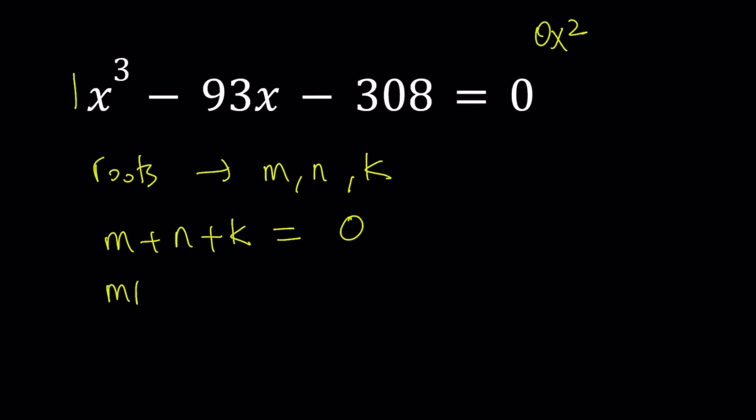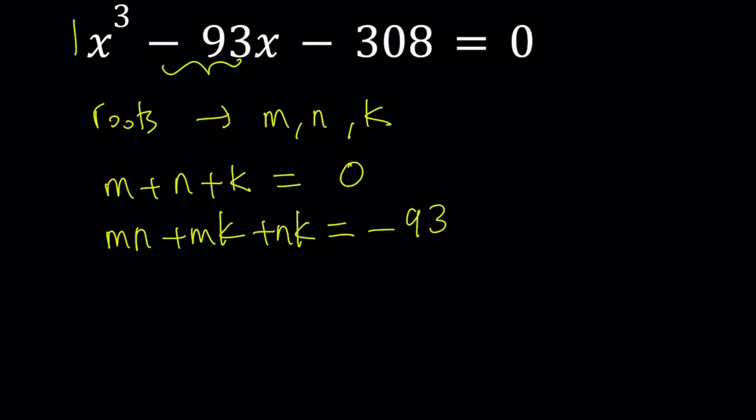What about the two ways, mn, mk, and nk? That is c over a. c is negative 93, so it's going to be negative 93. Simple, very easy. What about the product? Well, the product is the coolest part here, because that's what we're going to work on, basically. The product is negative d over a, which is the opposite of the constant term in this case. That will be 308. And that is the key to the solution.